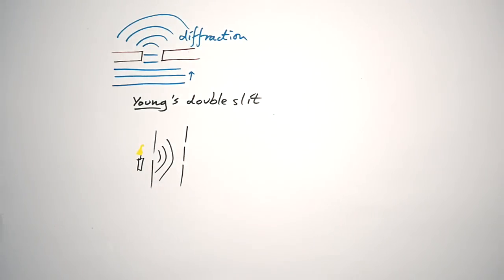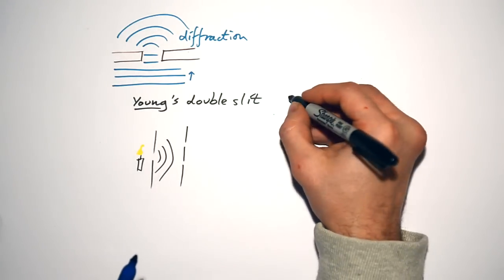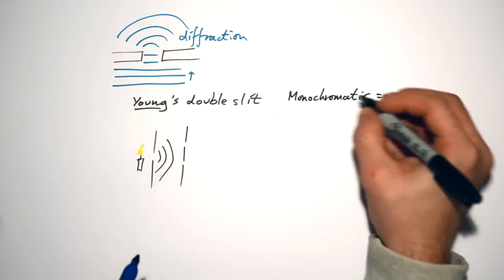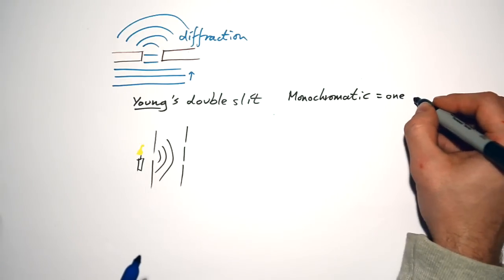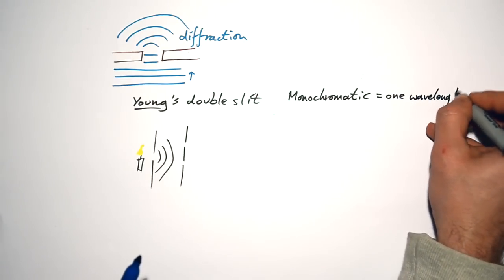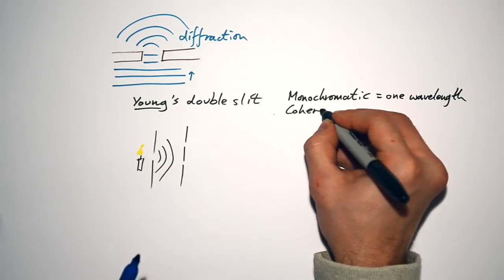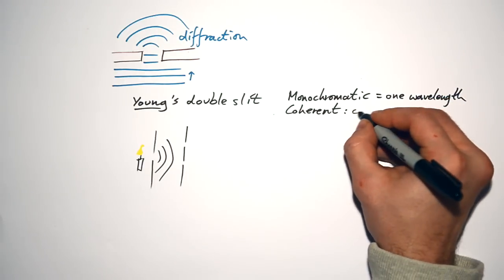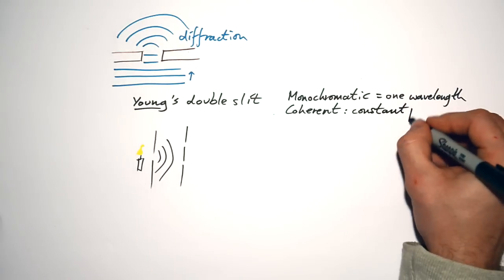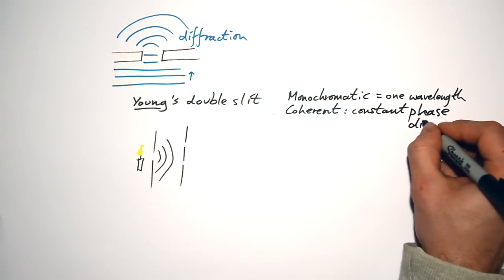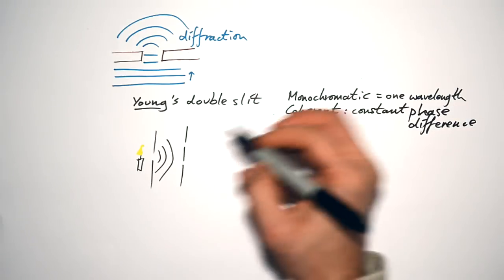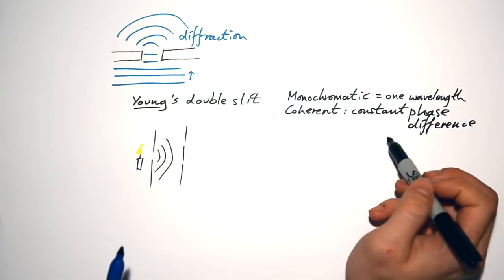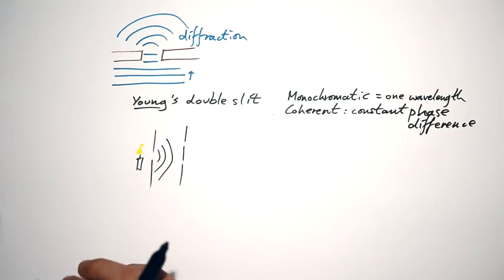He wanted monochromatic, coherent light coming out of these two slits. Monochromatic means one color or one wavelength. Coherent has the extra qualifier of constant phase difference. You might say that just means in phase, but when exams ask what coherent means, they like the definition: monochromatic and constant phase difference — not just in phase.